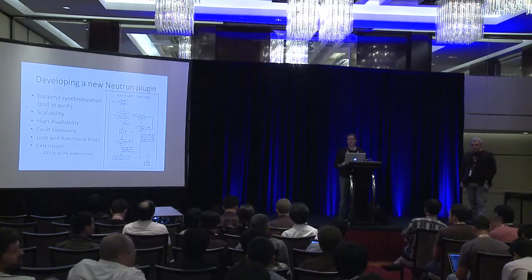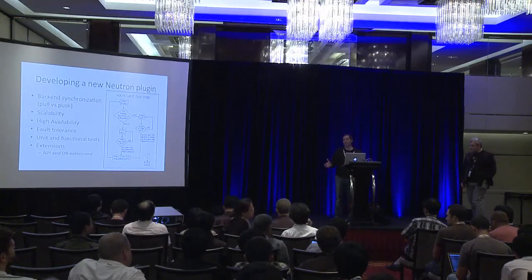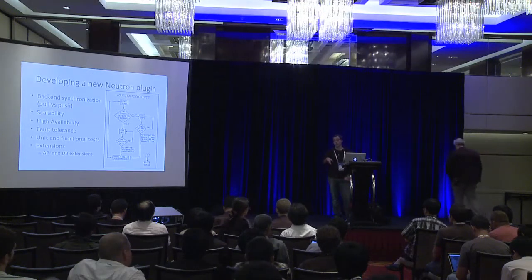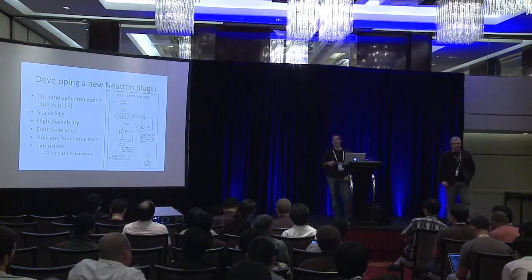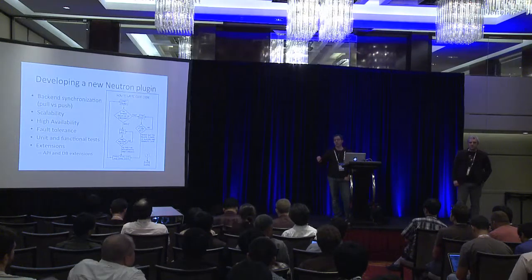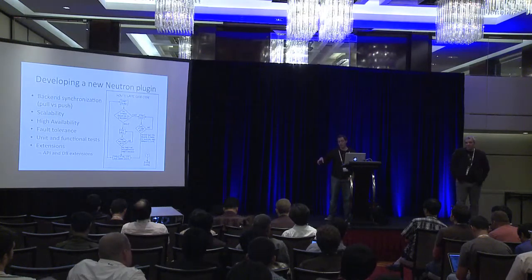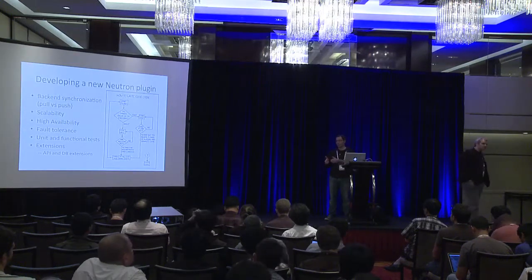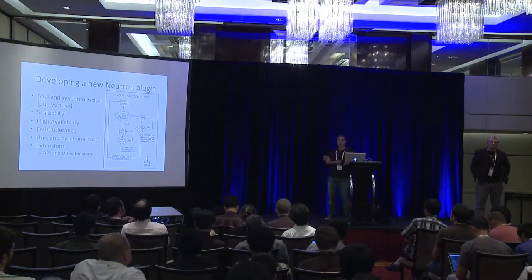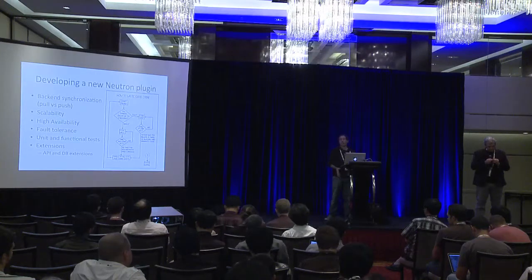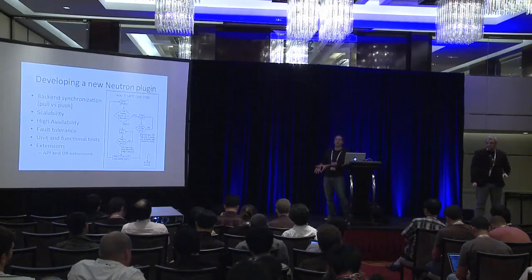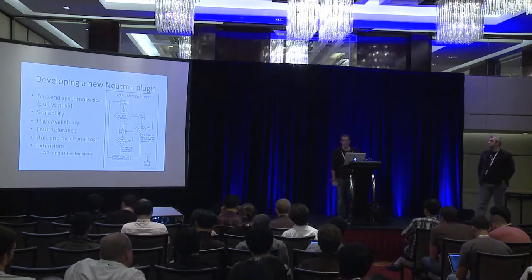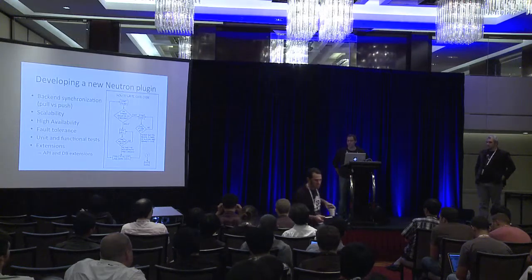OVSDB is local to the OpenVSwitch on the hypervisor, and Neutron has no actual knowledge of the state on that OpenVSwitch other than the kinds of ports that exist on that node and the state of those ports. We don't have access to things like performance counters. There is a snapshot picture of the important state in Neutron's DB, but Neutron has no way to access that local DB on the OpenVSwitch, and there is no real intention of doing so for scalability reasons.